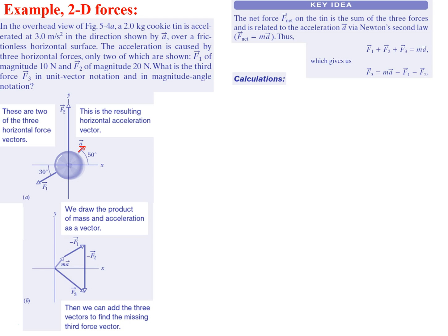The acceleration is caused by three horizontal forces, only two of which are known. We know F1, which has a magnitude of 10 Newtons, and F2, which has a magnitude of 20 Newtons. F1 is going in this direction, and F2 is following the y-axis of the net direction. They're asking: what is the third force, F3, in unit vector notation and in magnitude-angle notation?